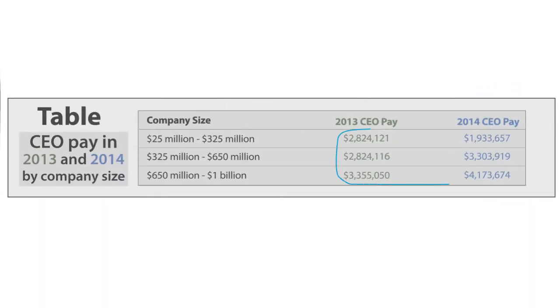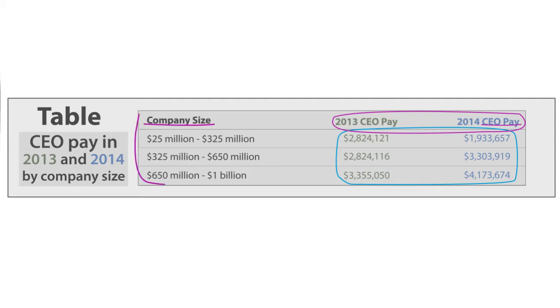If you're presenting a table, explain what the columns and rows represent. For example, this table shows CEO pay in the years 2013 and 2014 by company size.